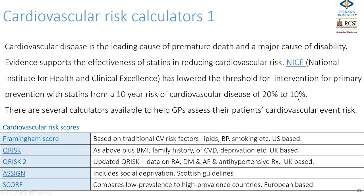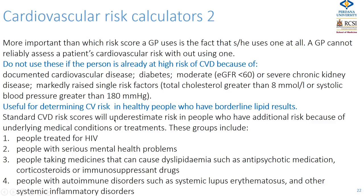Several calculators are available to help assess cardiovascular risk: the Framingham score, the QRISK score, and the British Joint Societies' Coronary Risk Predictor. It probably doesn't matter too much which score chart you use — what's more important is that you use one at all. It is very difficult to assess cardiovascular risk without doing this.